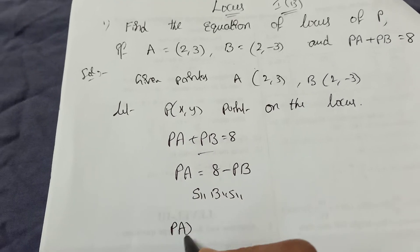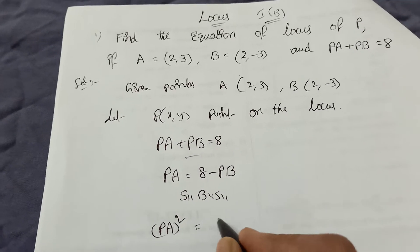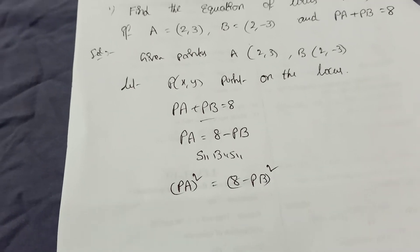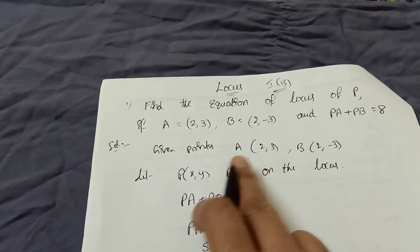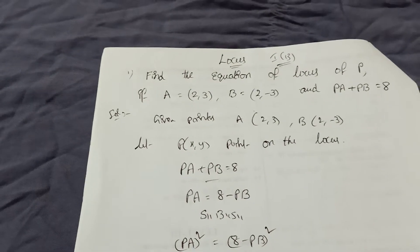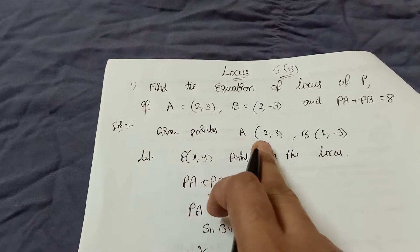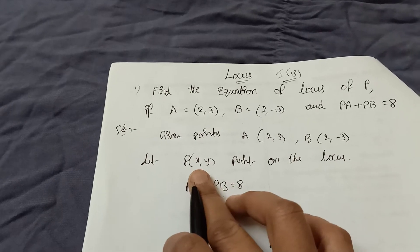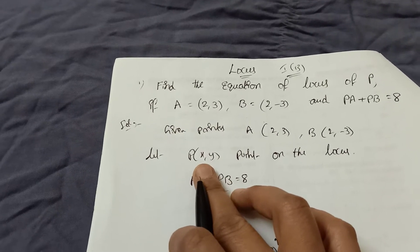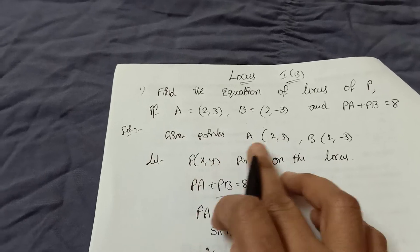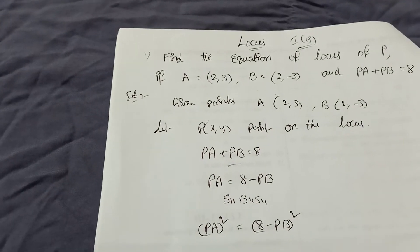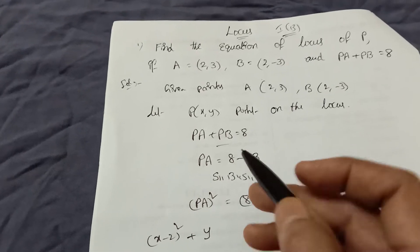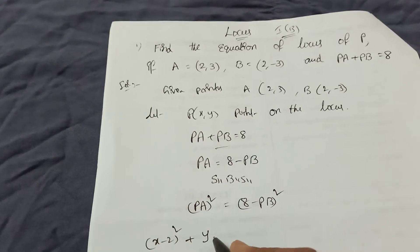Now squaring on both sides: PA squared equals (8 minus PB) whole square. PA squared means the distance P to A. Using the formula (x₂ - x₁)² + (y₂ - y₁)², that gives us (x - 2)² plus (y - 3)². The square root cancels because we squared both sides.